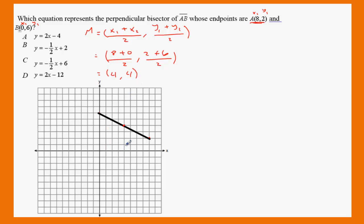1, 2, 3, 4. 1, 2, 3, 4. The coordinate here is 4 and 4. This is the midpoint. That's the first step.